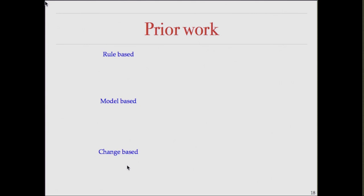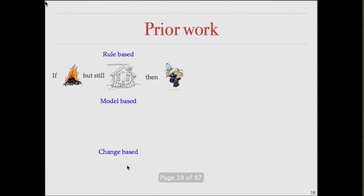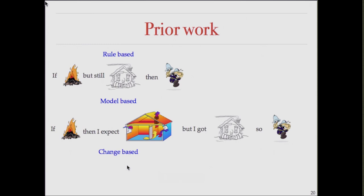What is a rule-based method? It's very simple: if I'm heating the building but it's still cold, raise an alarm. You can think of slightly more complicated rules. Model-based methods, drawing on physical models, are more complicated: if I heated the building I expect hot air to flow in certain ways and certain parts to be certain temperatures, but I got something else — raise an alarm.